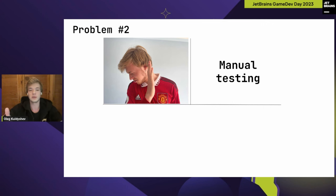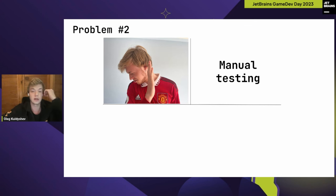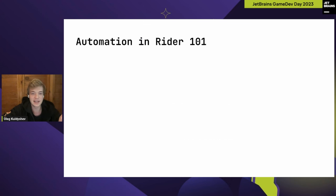The cost of a mistake is really big — not only for testers but for everyone, especially users. Our undeniable helper for minimizing risks brought by manual testing is automation. Let's take a deeper look at how automation in Rider basically works and how we automate things.